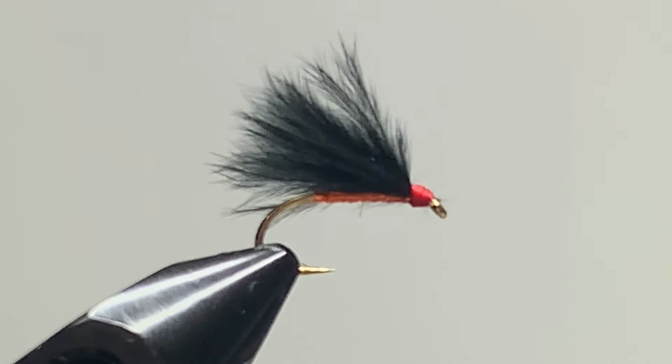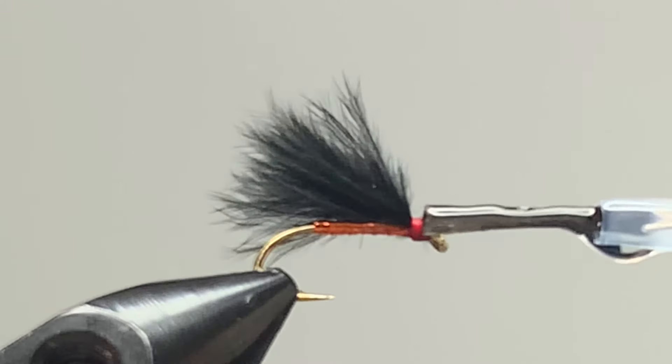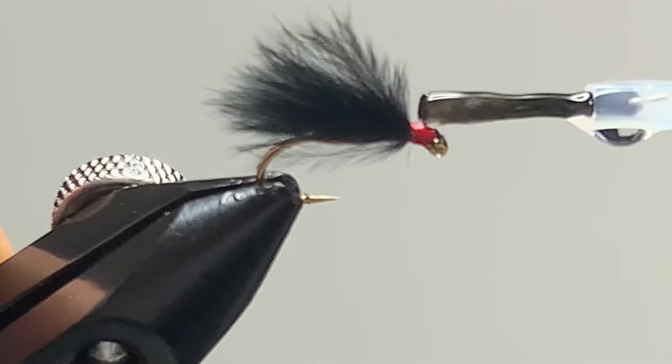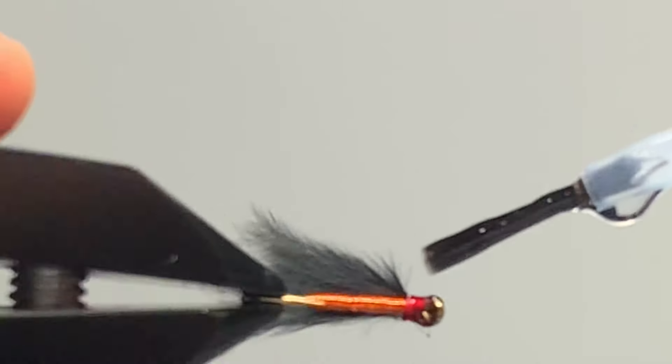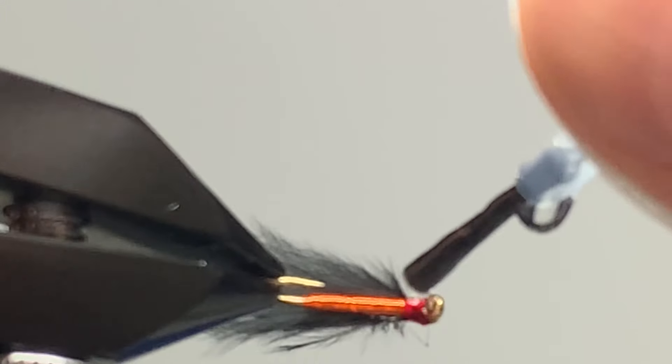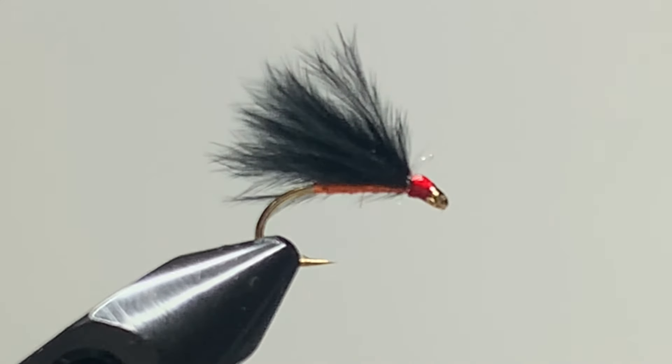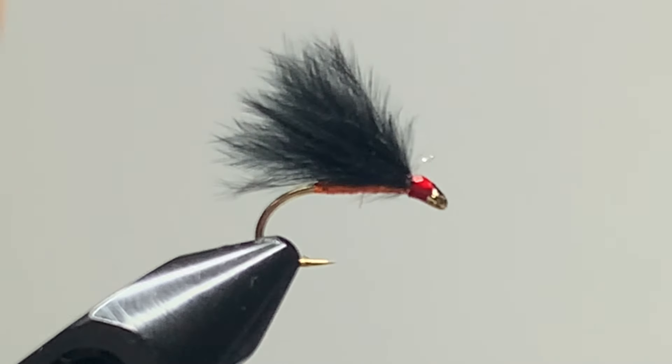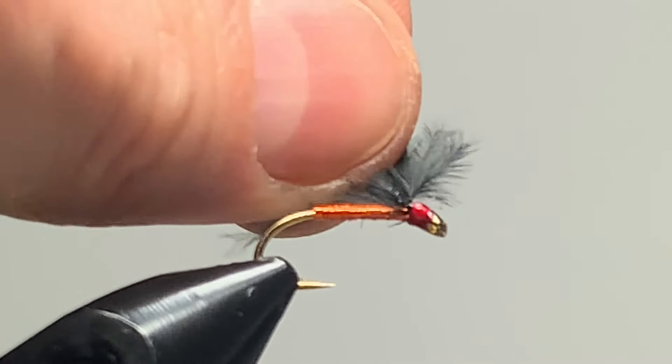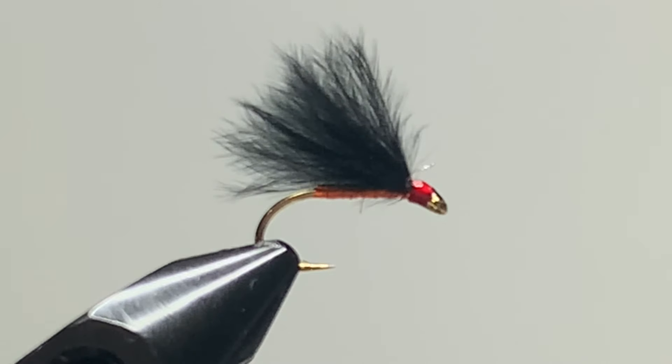So I finish off the fly with a small bit of varnish to seal the head. As you can see, a lovely look to that orange tinsel. And that is my orange cormorant.